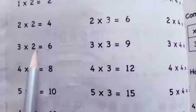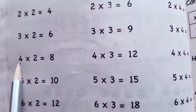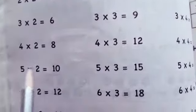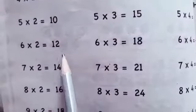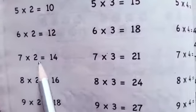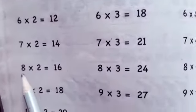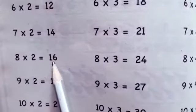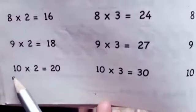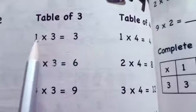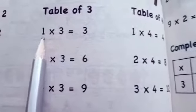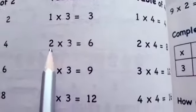One time two is two, two times two is four, three times two is six, four times two is eight, five times two is ten, six times two is twelve, seven times two is fourteen, eight times two is sixteen, nine times two is eighteen, ten times two is twenty.